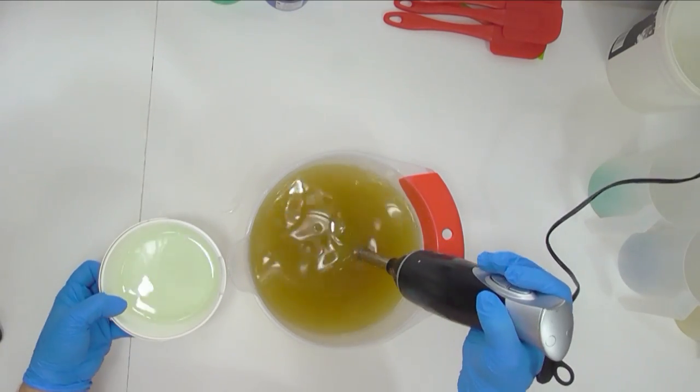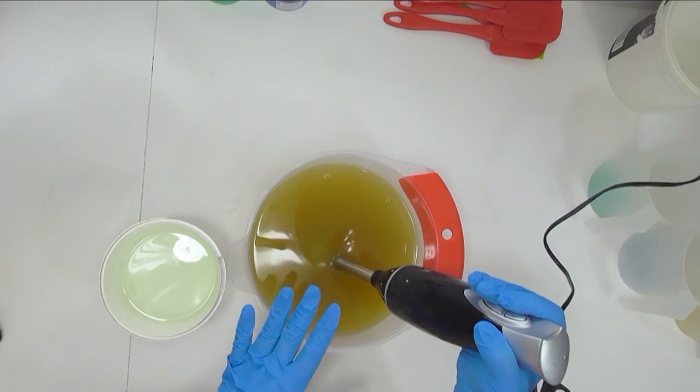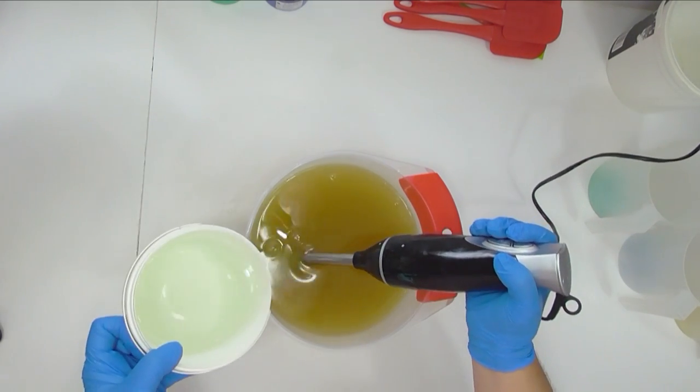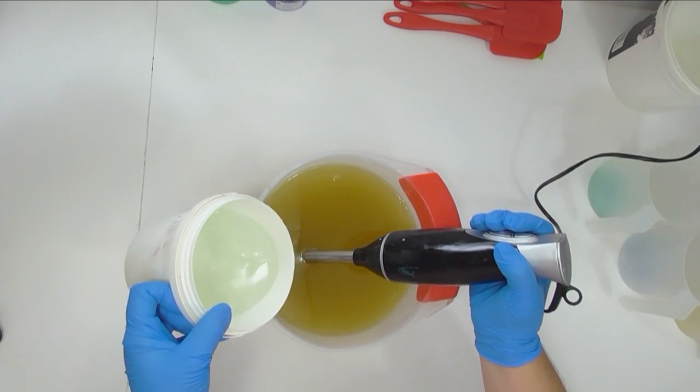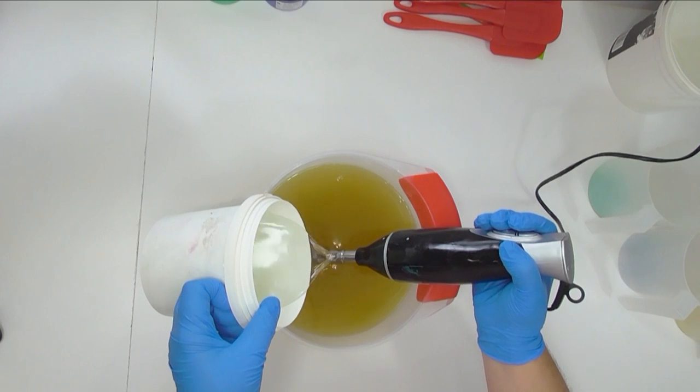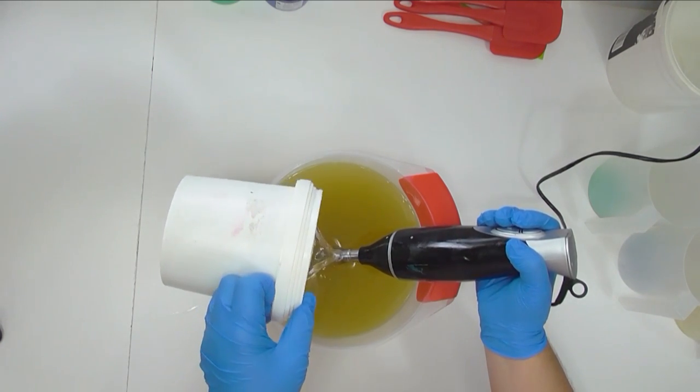So the first thing I'm going to do is pour my lye water into my oils. I pour them down my stick blender just to stop any splash back. I'm going to mix this up and then I'll split it out for the colors before adding fragrance and stirring it together.